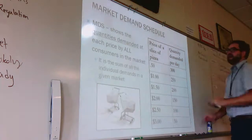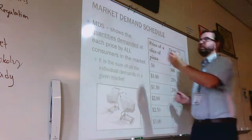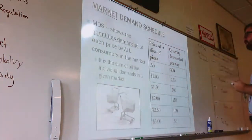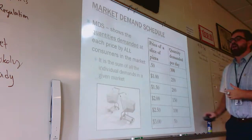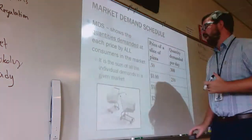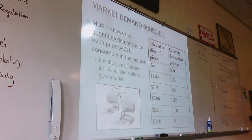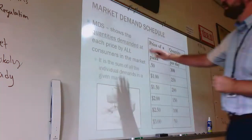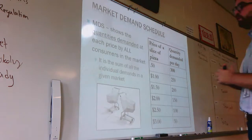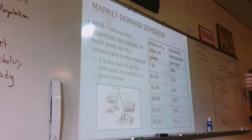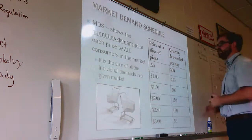Any time we see the word 'market' in front of something — like a market demand schedule or market supply schedule — we're just looking at it on a larger scale. Instead of one pizza place, we're looking at all the pizza places. If you wanted to open a pizza restaurant in a new town, you'd go around to other pizza restaurants and see at what prices they're selling, how busy they are, and make a market demand schedule. Anytime you see 'market,' know we're looking at a much bigger scale — the entire town, state, or country, not just an individual.